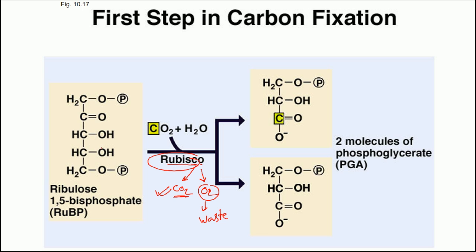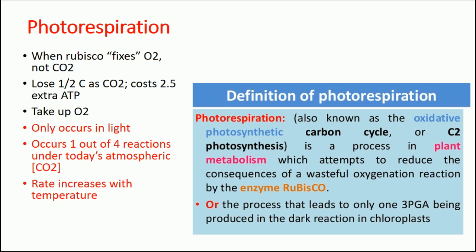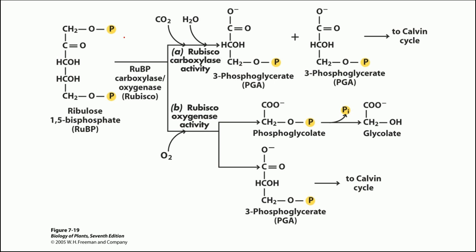In the normal process, ribulose-1,5-bisphosphate reacts with carbon dioxide and water, and the carbon gets fixed into two molecules of phosphoglycerate. But when RuBisCO fixes oxygen instead of carbon dioxide, it uses half the carbon as carbon dioxide and causes 2.5 extra ATP to be consumed every single time it does so. This oxygen fixation only occurs in light, and it occurs almost one out of every four reactions under today's atmospheric conditions.